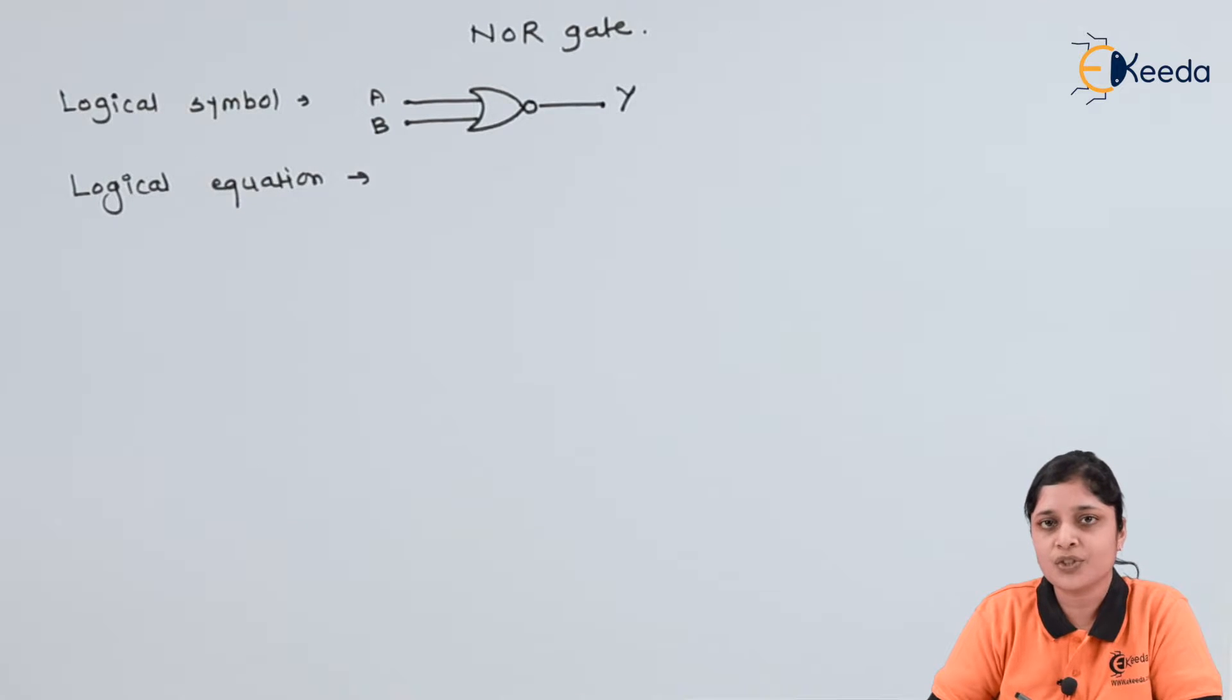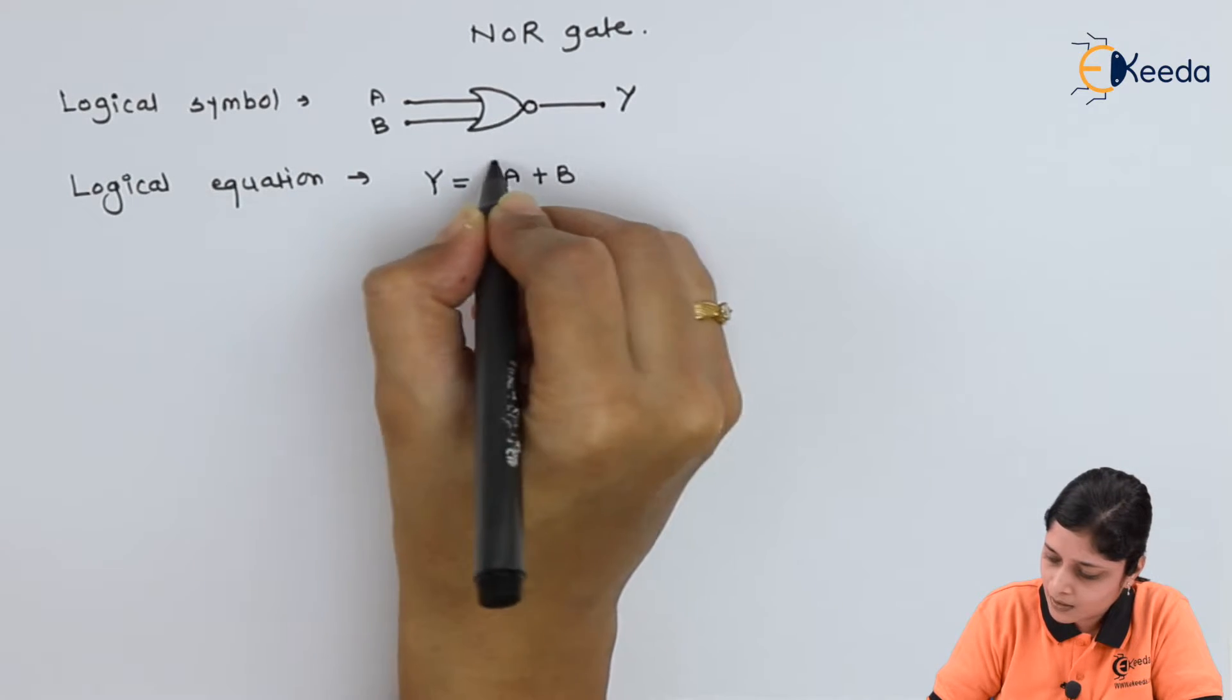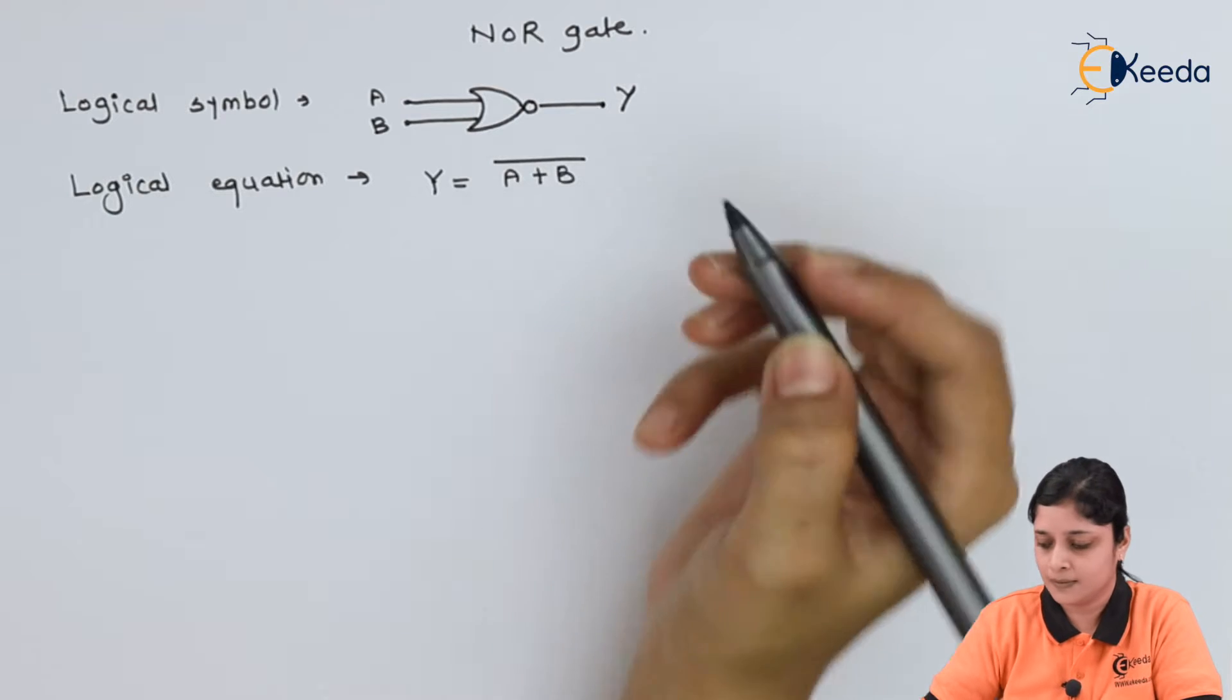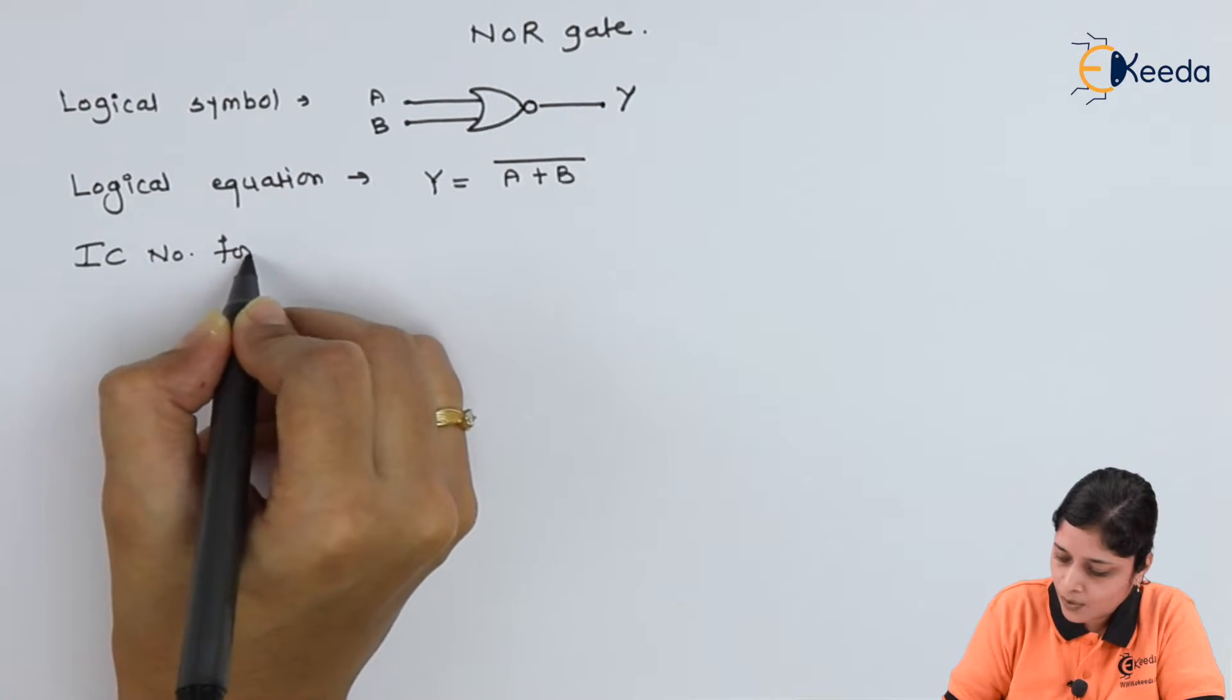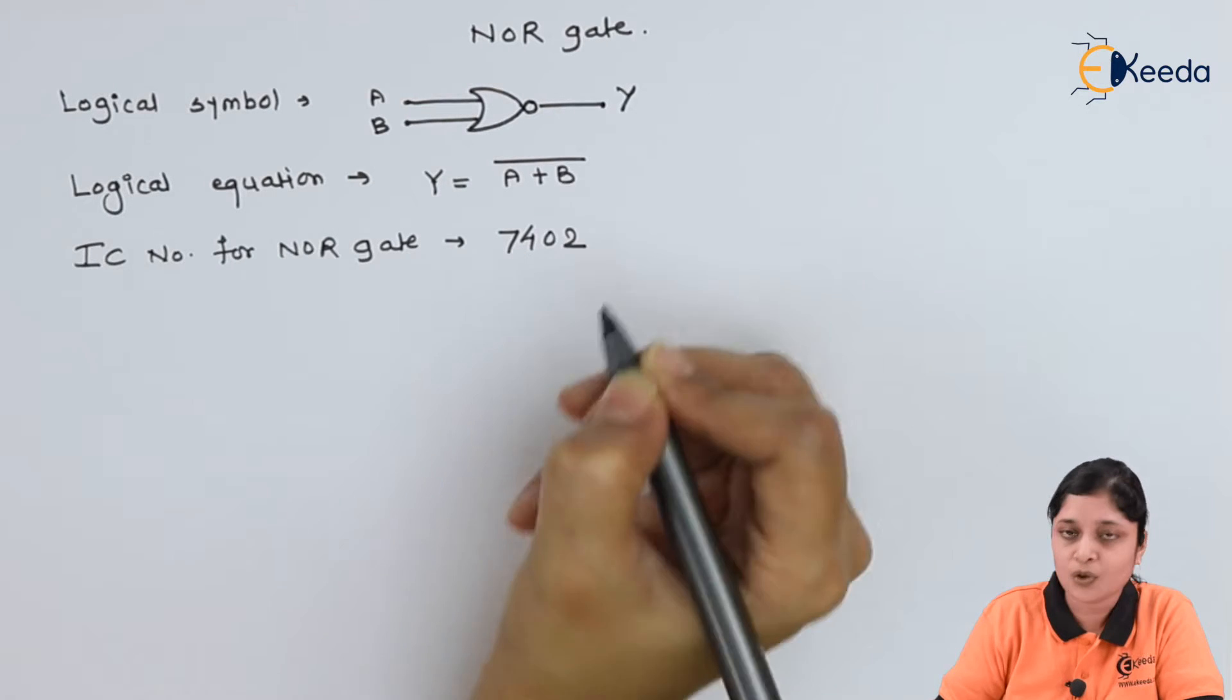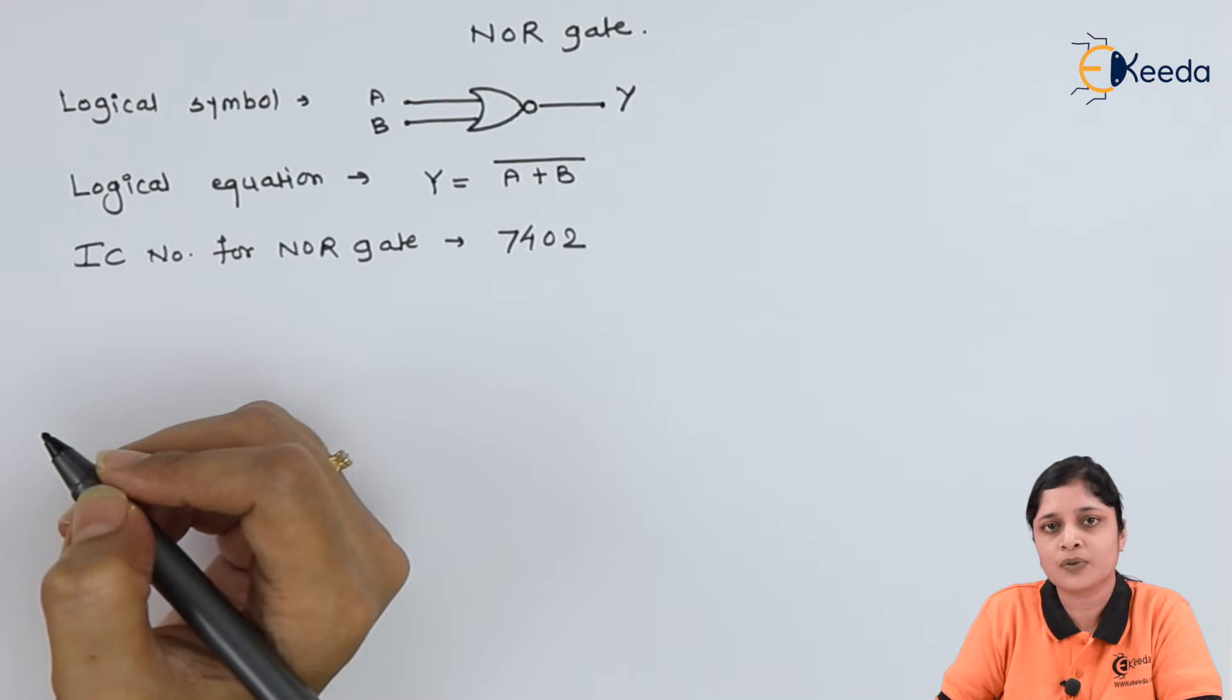Logical equation for the NOR gate is Y equals to A plus B bar. Here complement is there because of this bubble. IC number for NOR gate is 7402. Now we will start with the truth table and how you can get its output we will discuss.